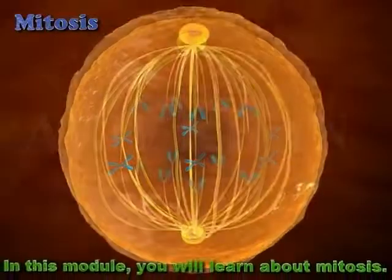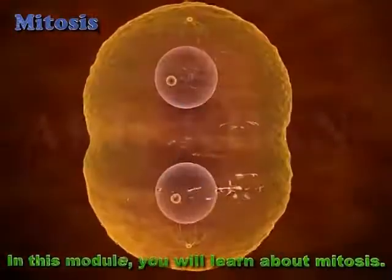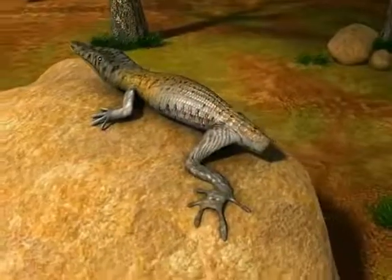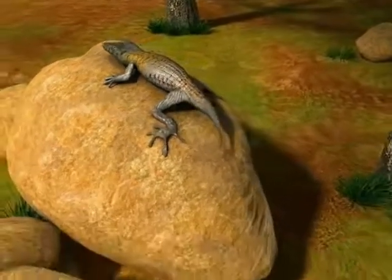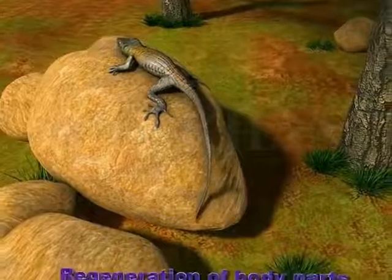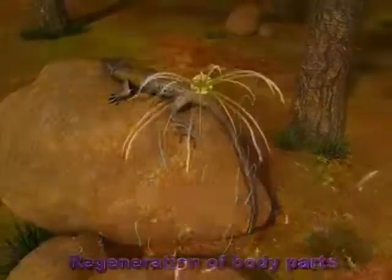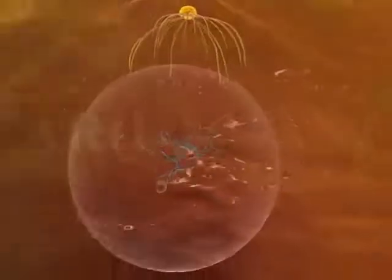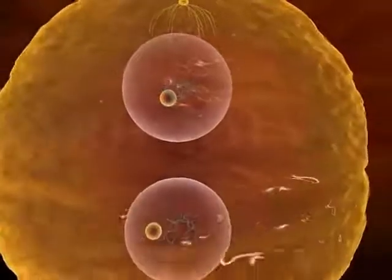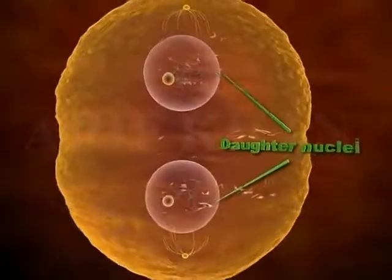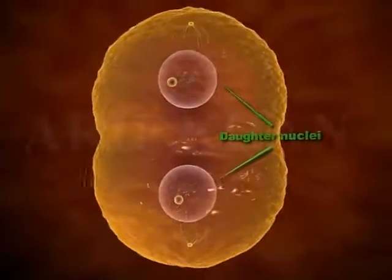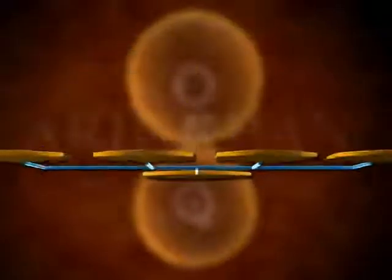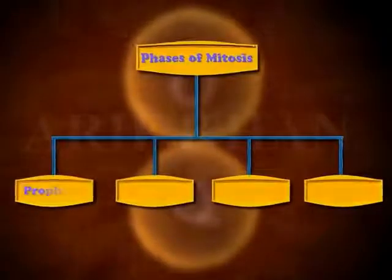Mitosis: In this module you will learn about mitosis. Mitosis is a process of cell division that makes possible regeneration of body parts. To elaborate, mitosis is the separation of nuclear chromosomes into two identical daughter nuclei. It is divided into four key phases: prophase, metaphase, anaphase, and telophase.